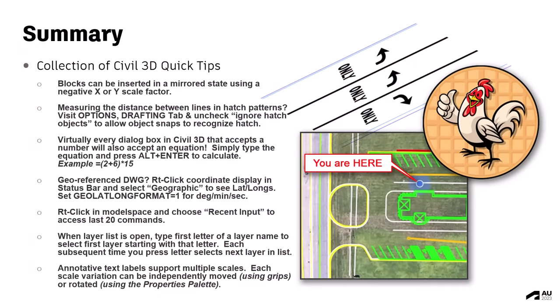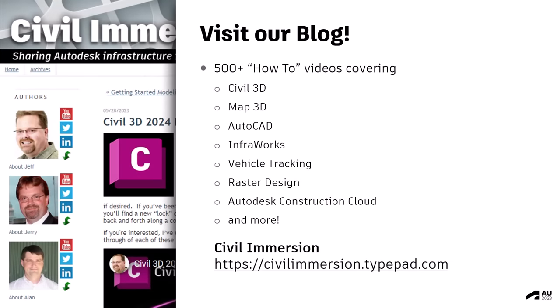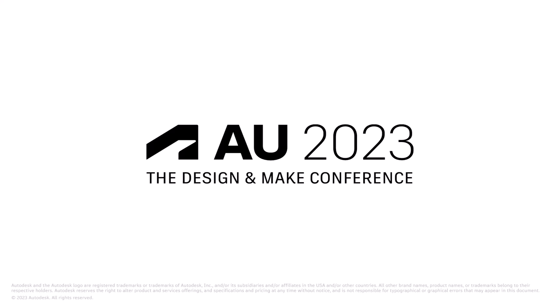Today we looked at a large collection of Civil 3D quick tips — listed on screen for your reference. I also showed you how to convert raster imagery into vector geometry using Illustrator, converting a company logo into a block to avoid reference issues when sending files. Finally, I showed you how to carry Civil 3D designs into the field by publishing a KMZ via Desktop Connector to the cloud and opening it through Google Earth using the Autodesk Construction Cloud app. For more tips, tricks, and workflows, please visit our blog — over 500 how-to videos covering many Autodesk civil infrastructure applications. Thank you so much for attending.